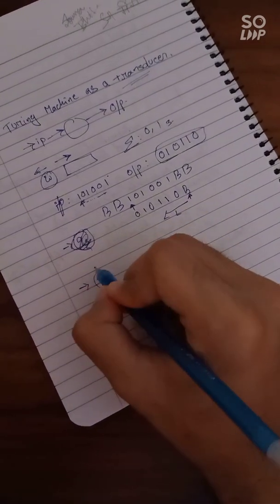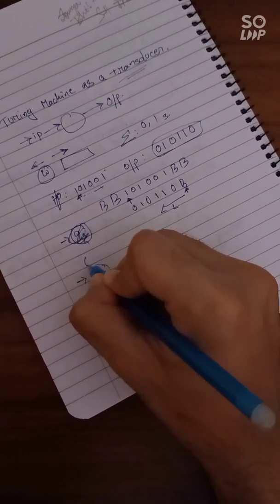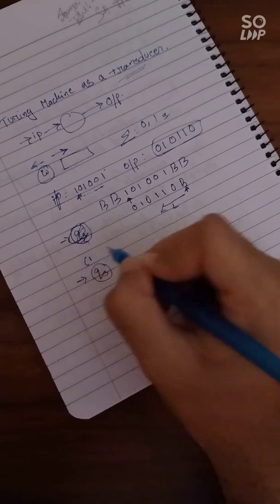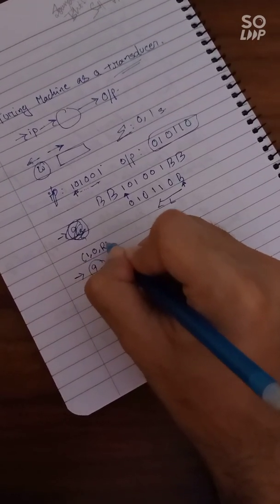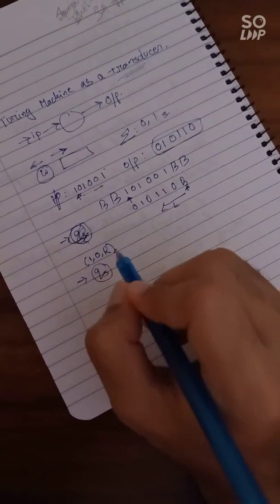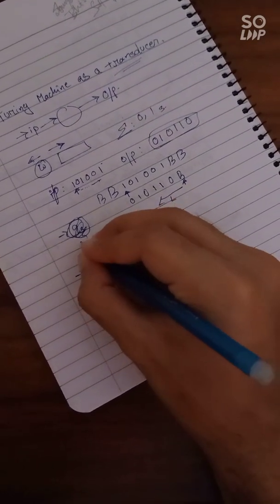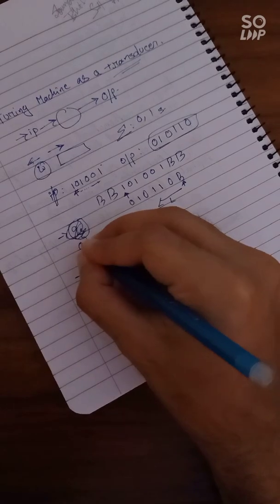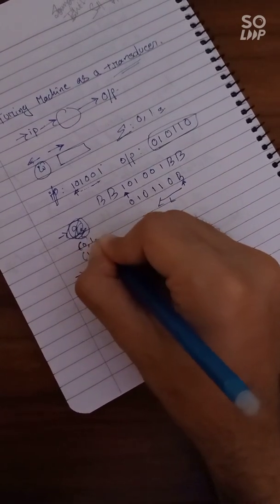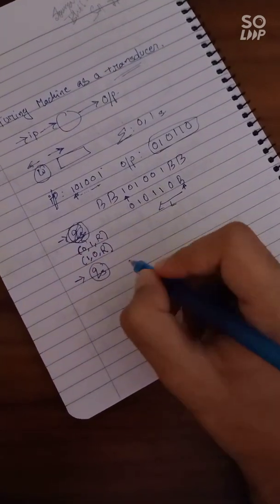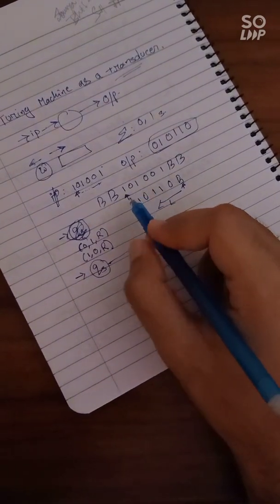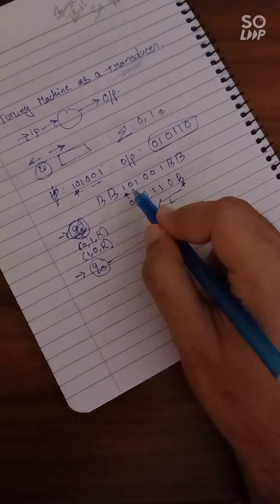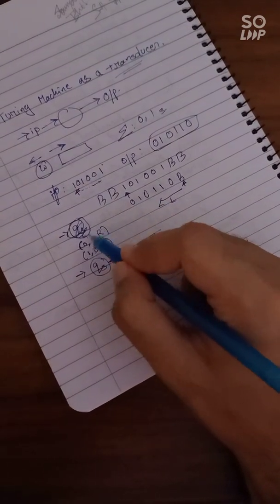And once it reaches this point, that is blank, it would keep on moving left. So the initial condition is if the input is 1, then make it as 0, then move right. All right, or if the input is 0, then make it 1, then move right.